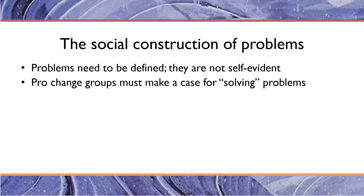Pro-change groups — that is, groups that want to change public policy — must make a case for "solving" problems. The reason "solving" is in quotes is because we probably never 100% solve problems. It's an old saying in environmental policy, well known by economists, that addressing the first 90% of a pollution problem may cost as much as resolving the last 10%. You'll understand this as the law of diminishing returns. Full solutions may not be available, but progress towards addressing a problem may be.